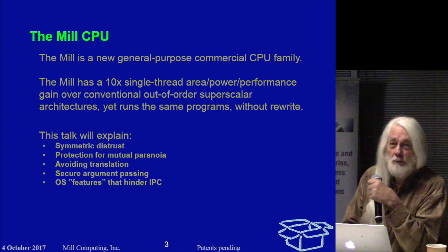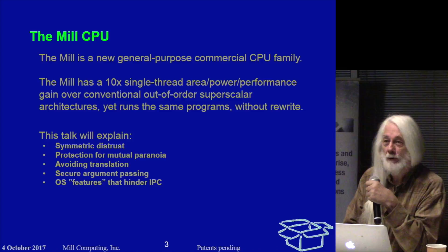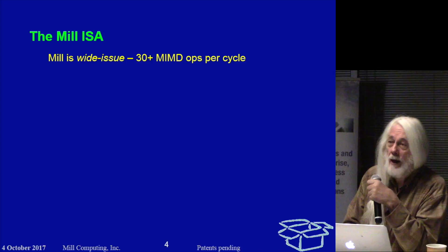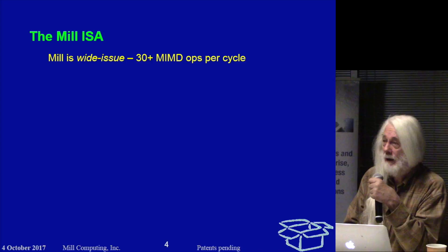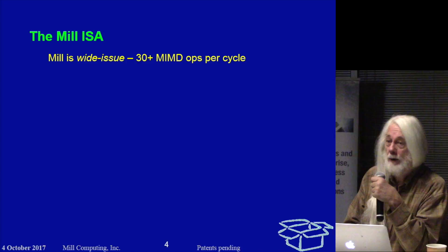This being a Unix group, I picked one of the Unix features that raises difficulties and explained a little bit about why it's troublesome and what we had to do about it. The instruction set architecture is a wide issue machine in the way that a VLIW or an EPIC machine are wide issue. Every cycle, depending on the family member — it's a family like the 360 is a family — the high ends can issue as many as 30 independent operations every cycle. That is not SIMD, that's not vector; each of these are individual operations — one is an add, one's a subtract, one's a branch — done simultaneously.